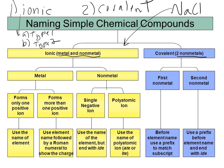First, determine if your compound is ionic or covalent. If it's ionic, you've got to determine if it's type 1 or type 2. Ionic again is between metal and non-metal. To determine type 1 or type 2, you'll look at the metal. Metals form cations because metals always form positive charges — they lose electrons. If the metal forms only one positive ion, that's type 1. If it forms more than one positive ion, that's type 2.